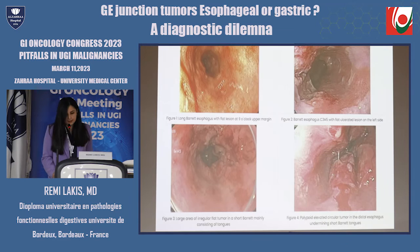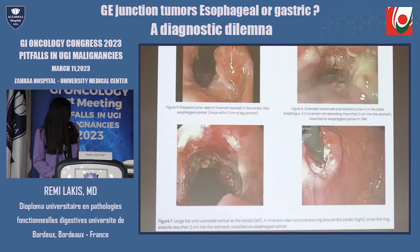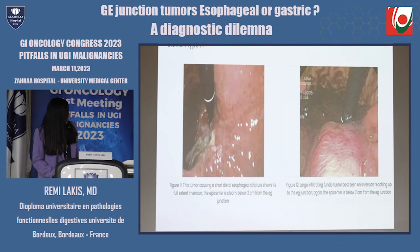These are some endoscopic photos. This is a Siewert type 2 cardiac tumor within 2 centimeters of the GA junction, and this is a Siewert type 3 tumor.